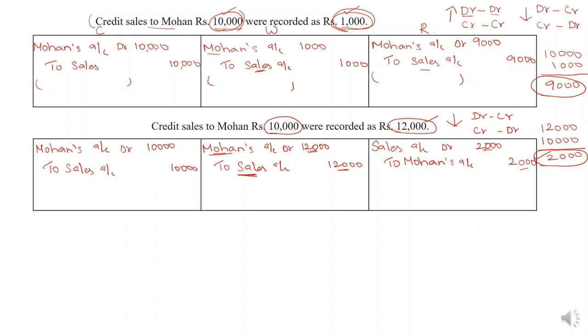To summarize: if values alone are to be rectified — not the entry itself — and you have to increase the value, debit should be debited and credit should be credited. If you have to decrease, it is the opposite. This logic applies to all types of transactions where only the amount needs to be changed.